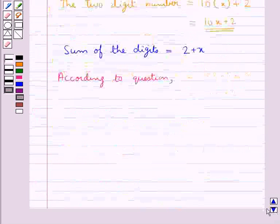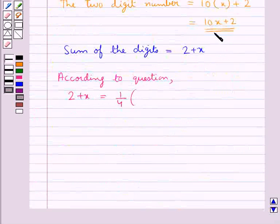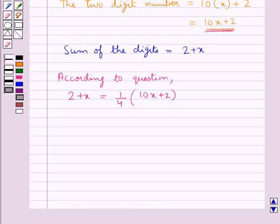So this means we have 2 plus X is equal to 1 upon 4 of the two-digit number formed that is 10X plus 2. So this further gives us 4 into 2 plus X is equal to 10X plus 2. That is 8 plus 4X is equal to 10X plus 2.